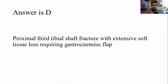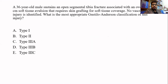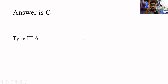The next question: a 36-year-old male sustains an open segmental tibial fracture with an overlying 8 cm soft tissue avulsion. There is a trick in this question — it requires skin grafting for soft tissue coverage, with no vascular injury identified. The word used is 'skin grafting,' not 'flap,' so this does not qualify for 3B. The answer is 3A.